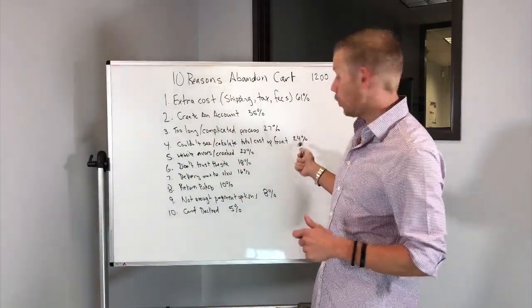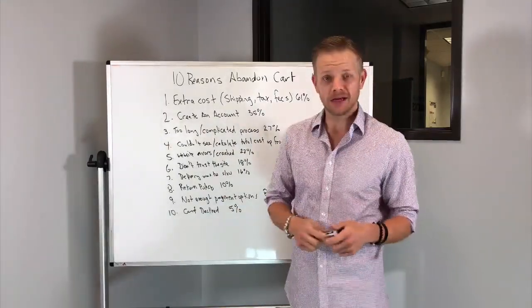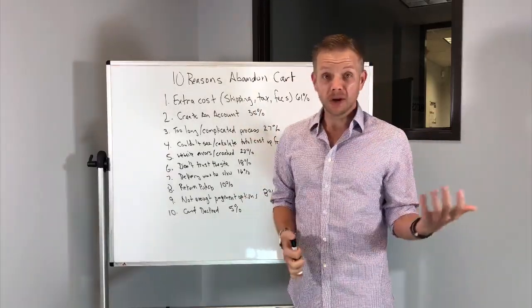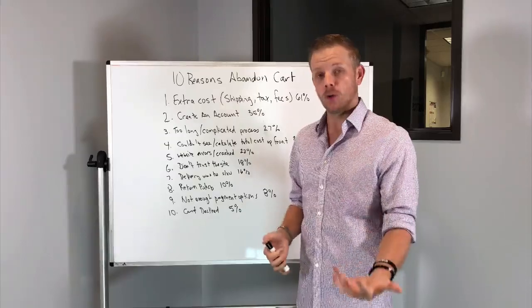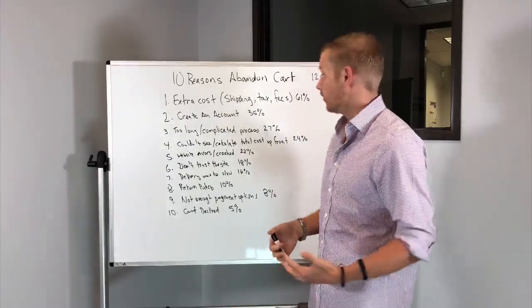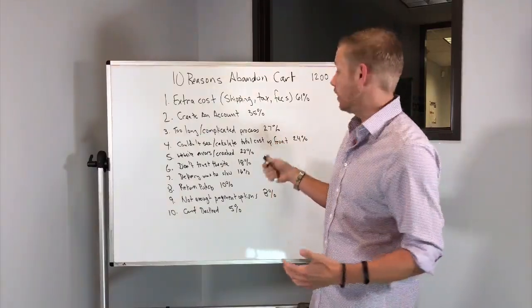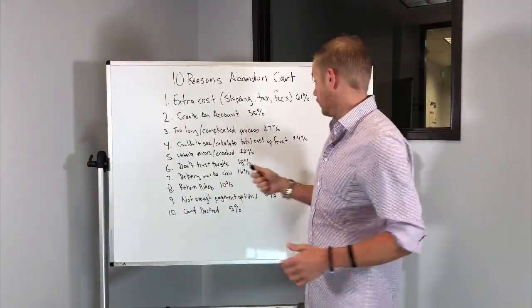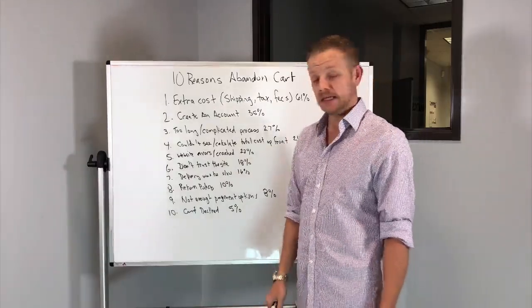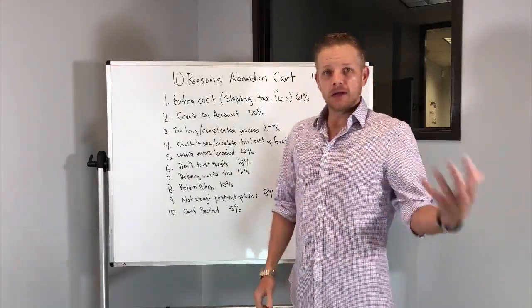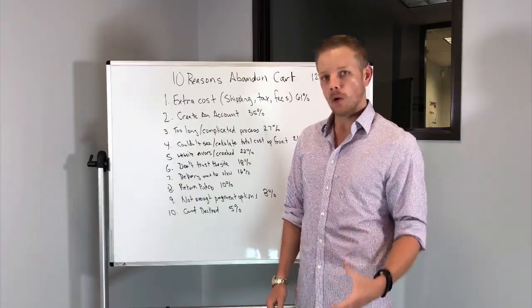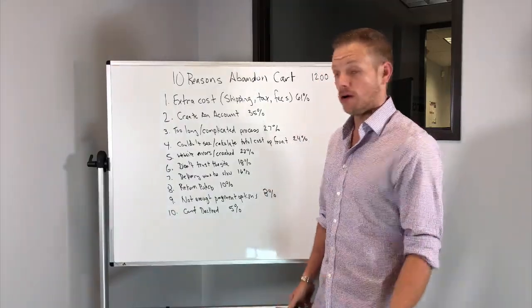Number four at 24% is couldn't see or calculate total cost up front. This kind of goes back to number one. But if the visitors can't see exactly what they're going to pay, this includes shipping, tax, and any other additional fees. Calculate and highlight the savings they're going to get and the absolute total early on in the process.